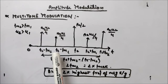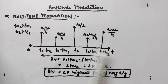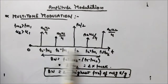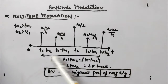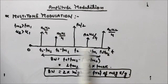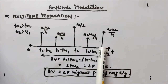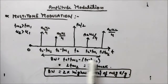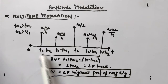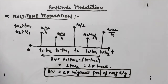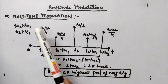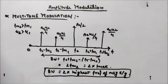This is the positive part of the spectrum; the same signal will also appear in the negative part, but we are interested in the positive part for bandwidth. The bandwidth spans from fc − fm2 to fc + fm2, which equals 2·fm2. So the bandwidth of the multi-tone modulated signal is 2 times the highest frequency of the message signal. If you have 4 or 5 frequency components, choose the highest frequency and multiply by 2 to get the bandwidth.